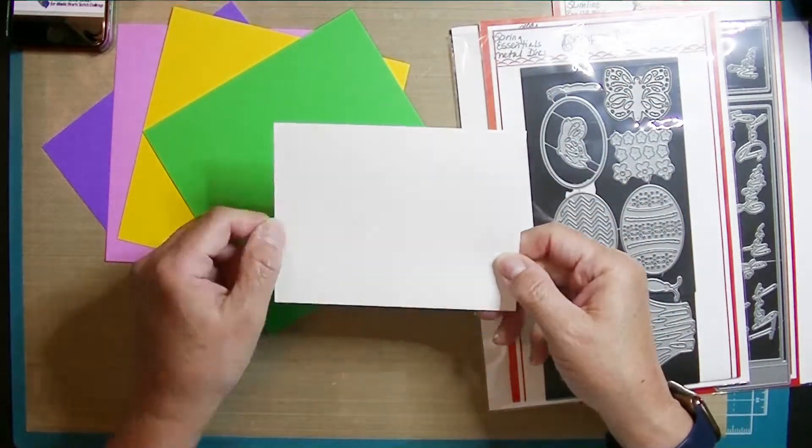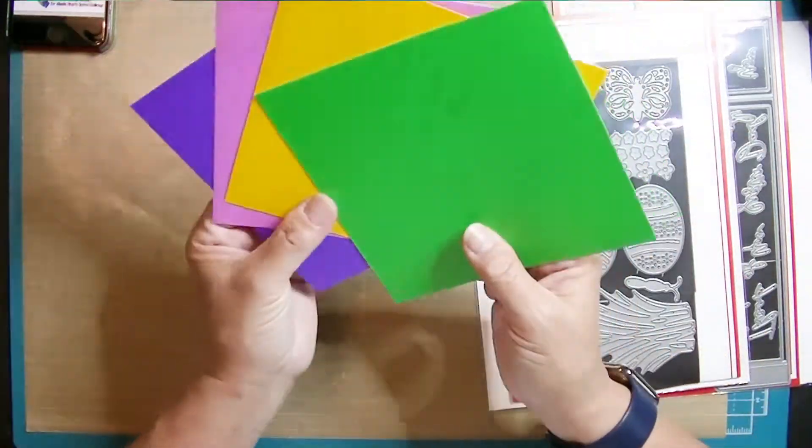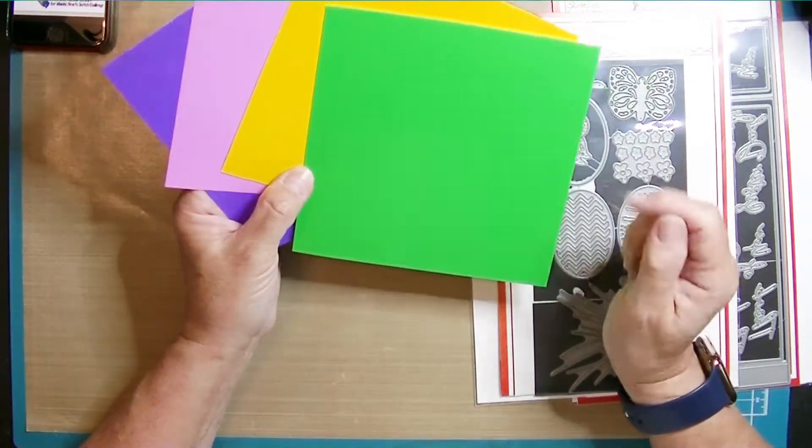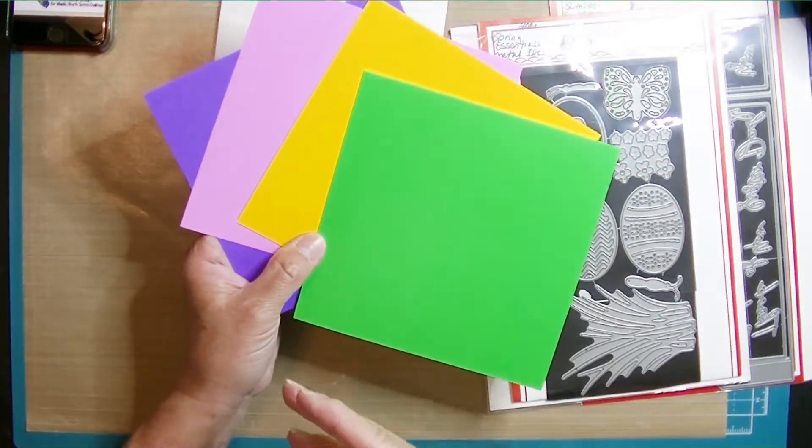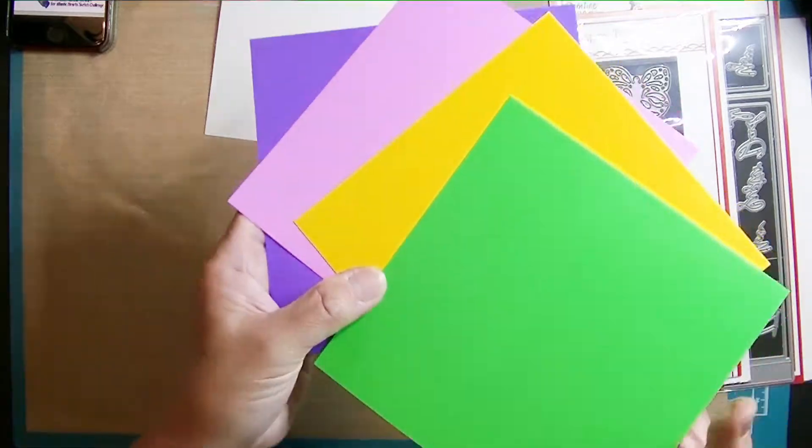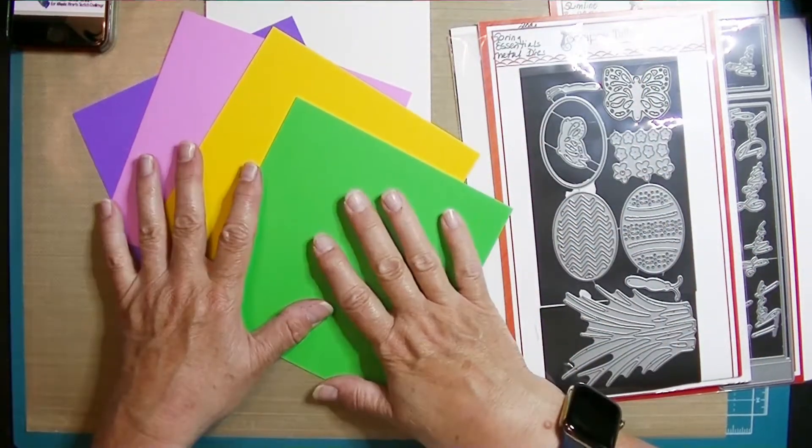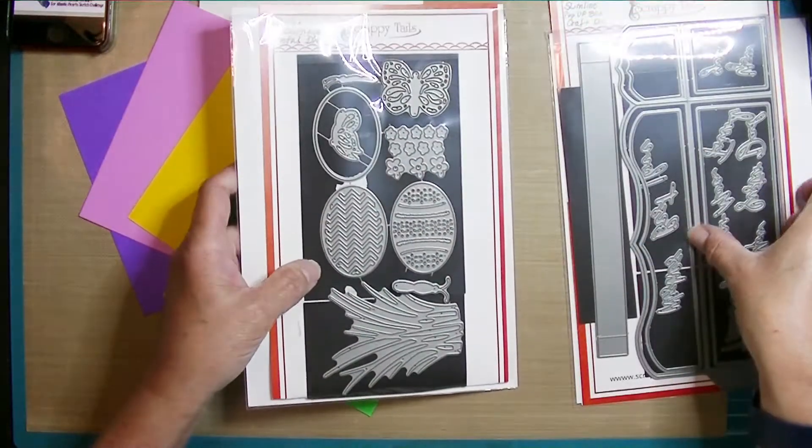So I've got a card base I cut at five and a half by eight and a half and I scored at four and a quarter. And then I've got some bright spring cardstock colors that I pulled out of a six by six paper stack.